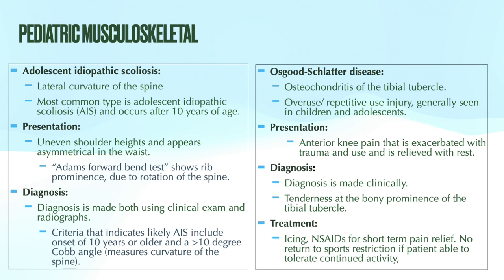Osgood-Schlatter disease, also referred to as osteochondritis of the tibial tubercle, occurs from repetitive use or overuse injury. It's generally seen in children and adolescents, and children who have had a recent rapid growth spurt are at increased risk. Symptoms include anterior knee pain that is exacerbated with trauma or use and relieved with rest. Diagnosis is made on exam with tenderness at that bony prominence. Treatment is very conservative: icing, rest, and NSAIDs for short-term pain relief. There are no return-to-sports restrictions — if they're able to tolerate continued activity, just do symptomatic treatment as needed. Typically, the symptoms resolve once the growth plate ossifies.